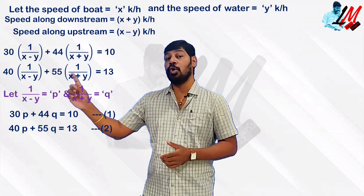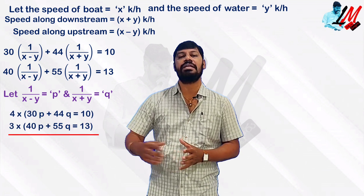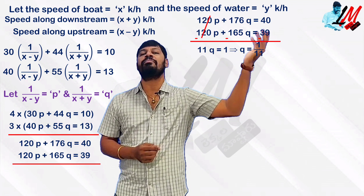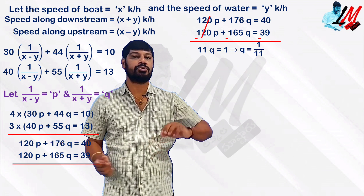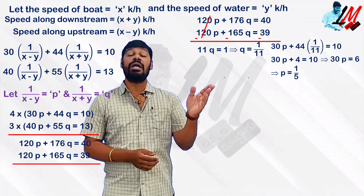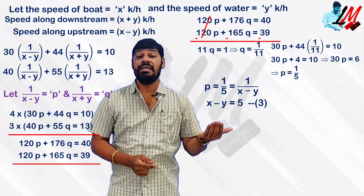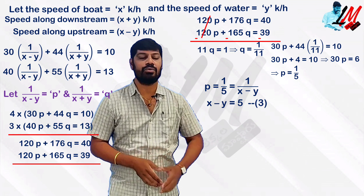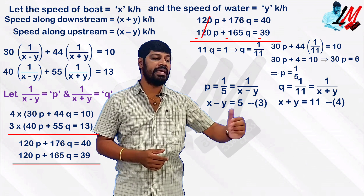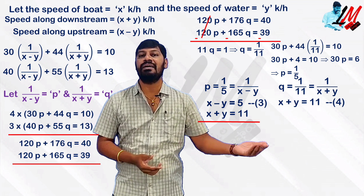To eliminate Q, multiply equation 1 by 4 and equation 2 by 3, then subtract. After elimination, we get P equals 1 by 5 and Q equals 1 by 11. Since P equals 1 by (x minus y) equals 1 by 5, by cross multiplication: x minus y equals 5. This is equation 3. Since Q equals 1 by (x plus y) equals 1 by 11: x plus y equals 11. This is equation 4.